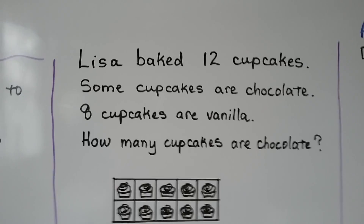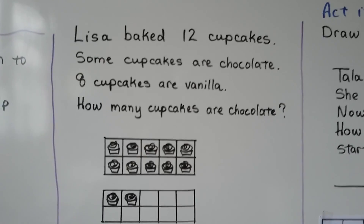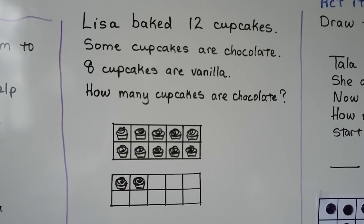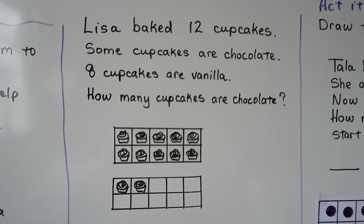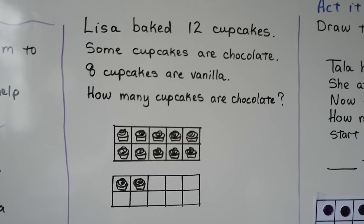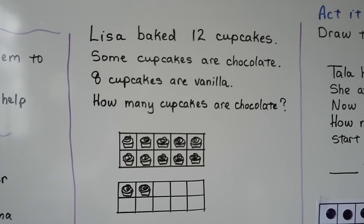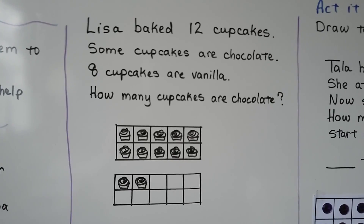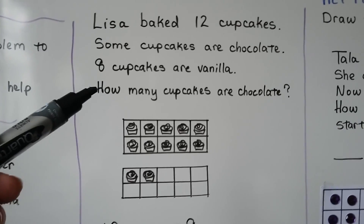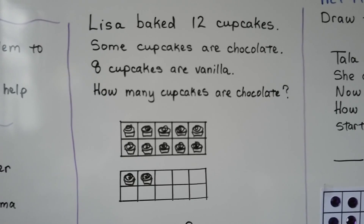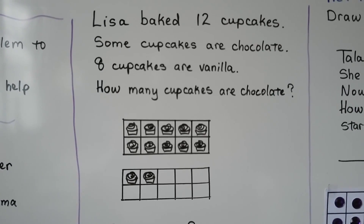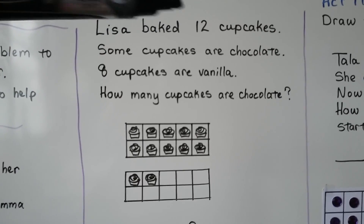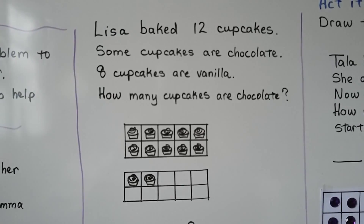Lisa baked 12 cupcakes. Some cupcakes are chocolate. 8 cupcakes are vanilla. So how many cupcakes are chocolate? What do we need to find? We need to find how many cupcakes are chocolate — that's the question. And what information do we need to use? We need to use that there were 12 and 8 are vanilla.